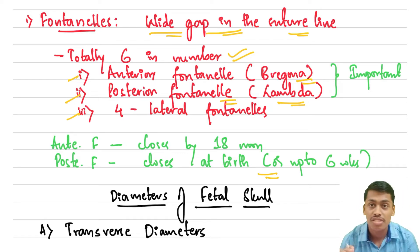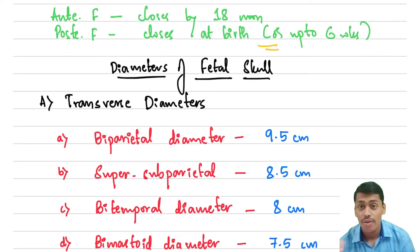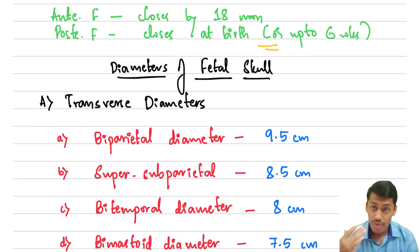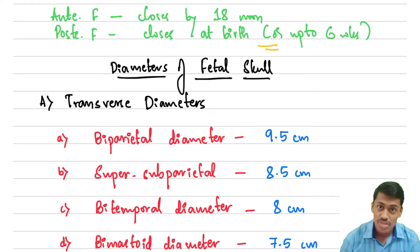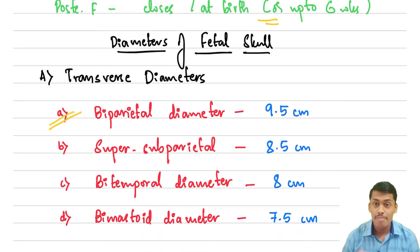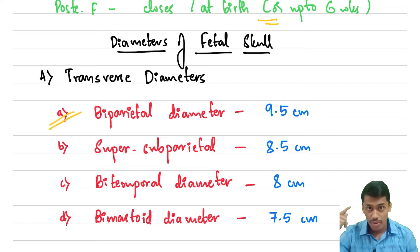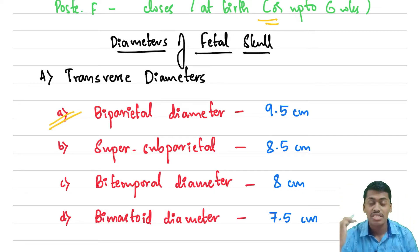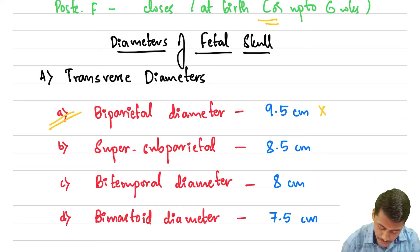Now let's move on to the important diameters of the fetal skull. We have two types of diameters: transverse diameters and anterior-posterior diameters. First we will discuss the transverse diameters. We have the biparietal diameter, which is the diameter between the two parietal eminences of the fetal skull. The parietal eminences are on the parietal bone, and this is a very important diameter.